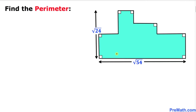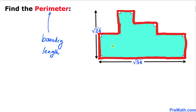Welcome to PreMath. In this tutorial we have a shaded shape whose base length is square root of 54 and whose height is square root of 24, and we are going to find the perimeter of this shaded region. Keep in mind that the perimeter is just the boundary length, as highlighted here.